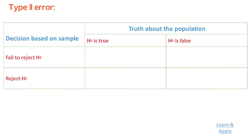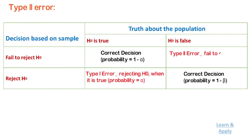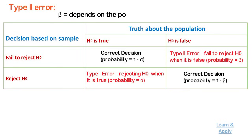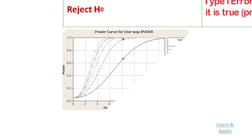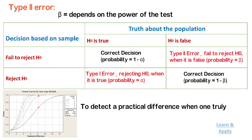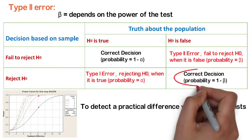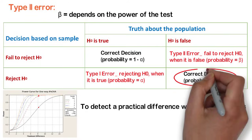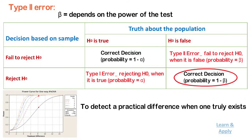Type 2 error: when the null hypothesis is false and you fail to reject it, you make a type 2 error. The probability of making a type 2 error is beta, which depends on the power of the test. You can decrease your risk of committing a type 2 error by ensuring your test has enough power — by ensuring your sample size is large enough to detect a practical difference when one truly exists. The probability of rejecting the null hypothesis when it is false equals 1 minus beta, which is the power of the test.